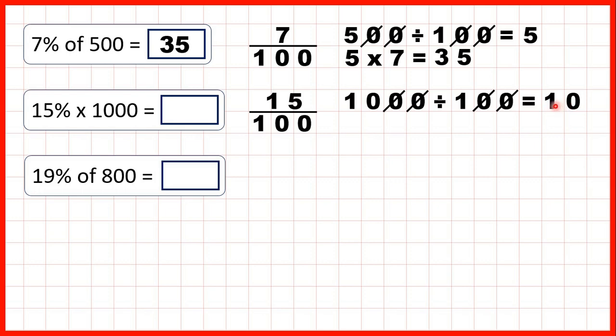So now we can take that answer, take that 10, and multiply it by the numerator, so work out 10 times 15. That's 150, so 15% times 1000 is 150.